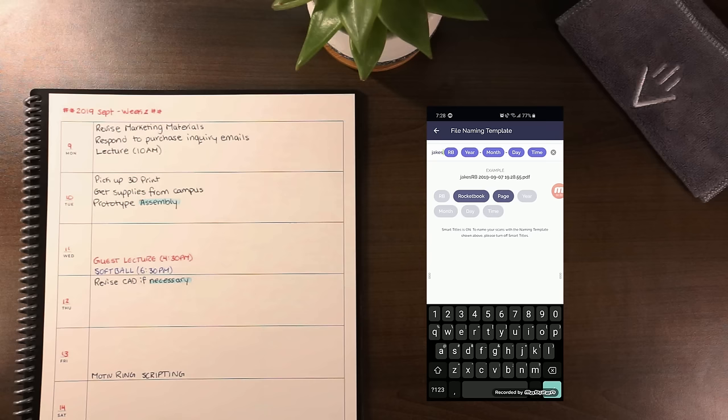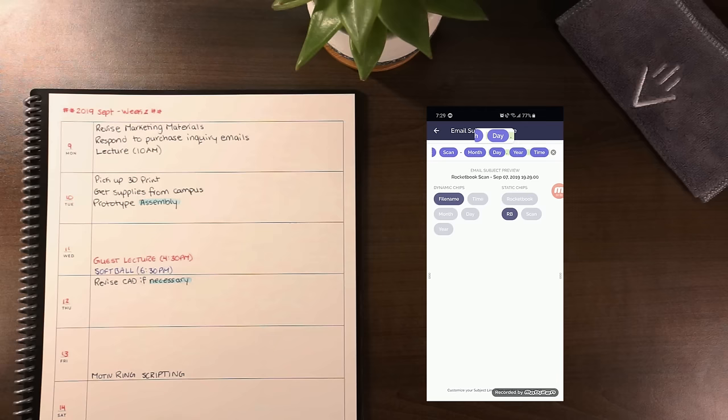Though, as of now, these create defaults for every scan you make. It would be nice if a future app update allowed you to set separate naming templates for each of the upload locations that correspond to your footer symbols.